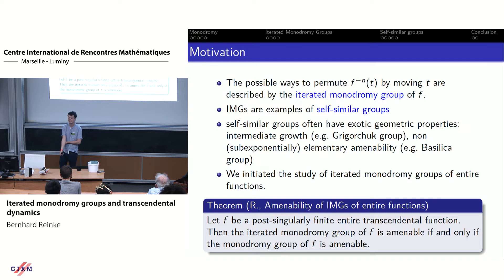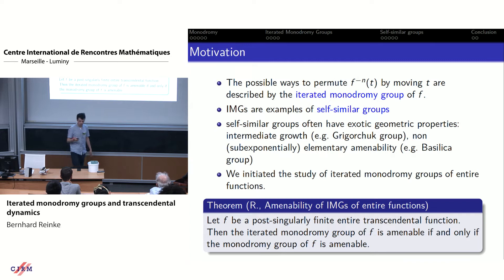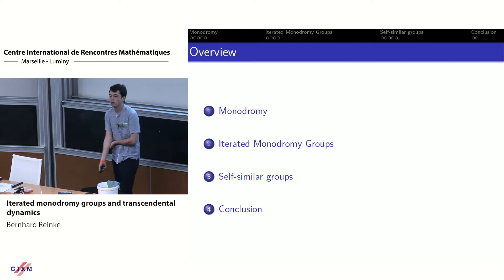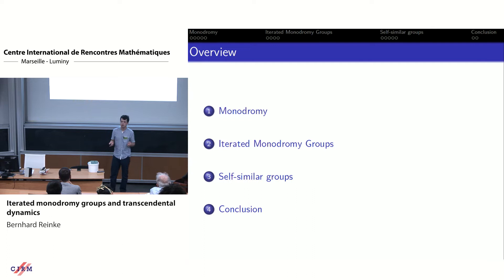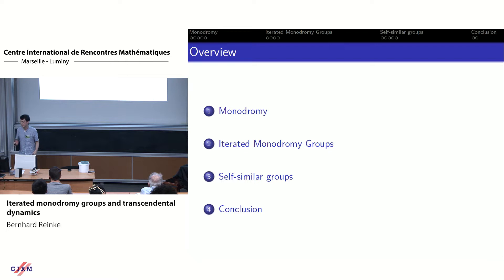One of the main results of the thesis is the following theorem: if you have a post-singularly finite entire transcendental function, then the iterated monodromy group of f is amenable if and only if its monodromy group is. In my talk, I will first do a brief recap on monodromy, then go over to iterated monodromy groups and show how to combinatorially conceptualize iterated monodromy groups of entire functions as groups determined by some automata. Then we will see how to prove this result.